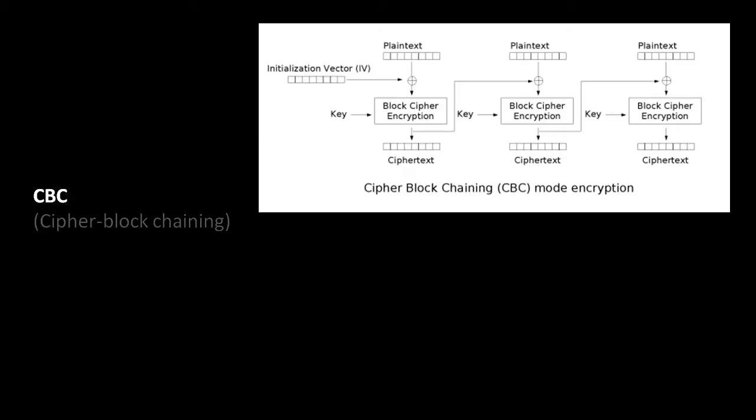That first block of ciphertext produced is what we use to XOR with the next block of plaintext, and then that result of the XOR is what we encrypt for the second block, giving us a second block of ciphertext. That second block of ciphertext is then XORed with the third block of plaintext, and so on. So every block of ciphertext is used as input to XOR with the next block of plaintext. Effectively, our plaintext is getting modified before encryption — first with the IV, then each successive block is modified by the ciphertext of the previous block — so identical plaintext blocks don't get encrypted as identical.